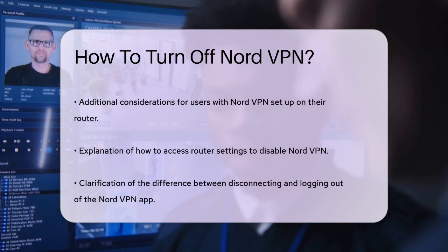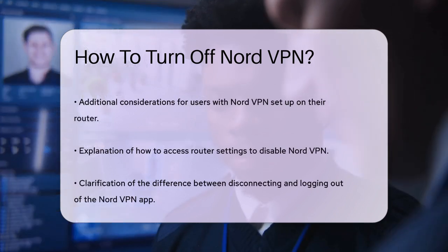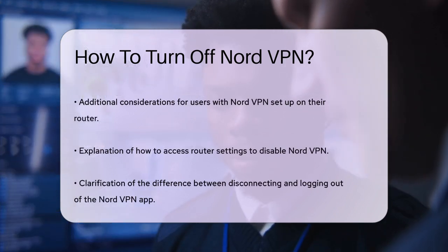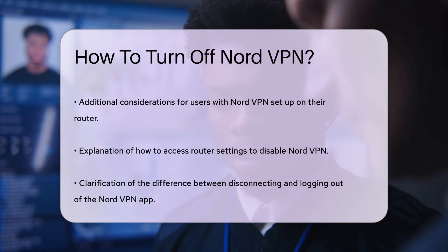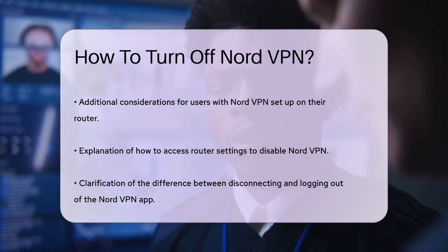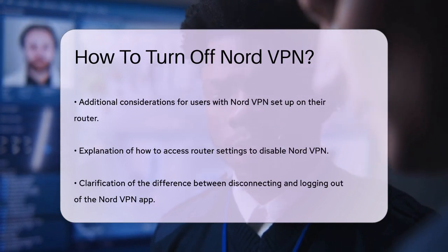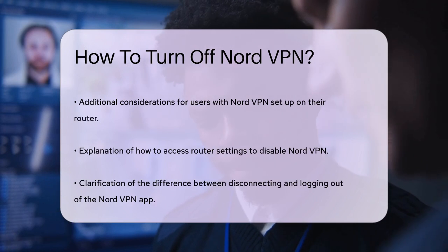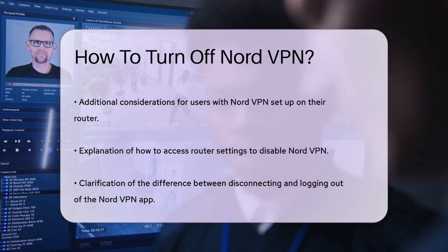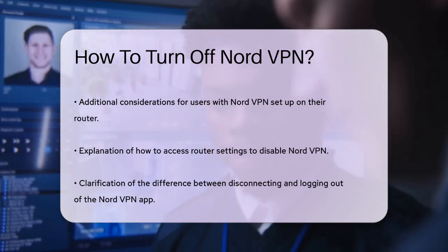If you've set up NordVPN on your router, disabling it might require a few more steps. You'll need to log into your router's Settings page, find the VPN Configuration section, and disable the NordVPN connection from there.